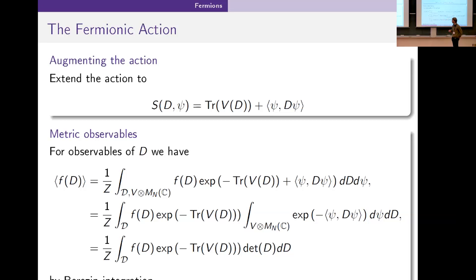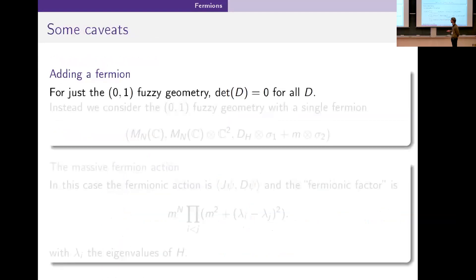This is our plan: we want to see what changes if we add in this fermionic action. There is an immediate problem. The determinant of the Dirac operator for the (0,1) geometry is always zero because it's a commutator. It has a kernel.